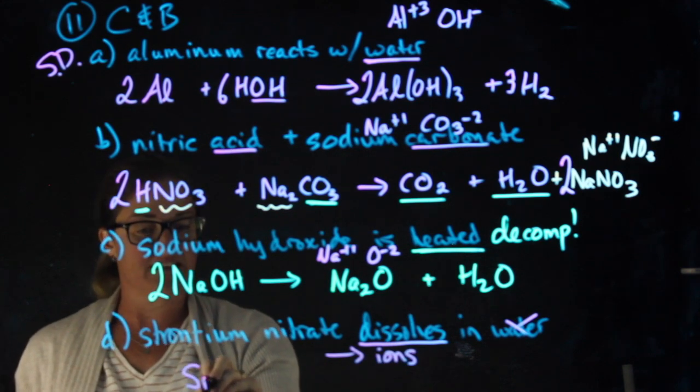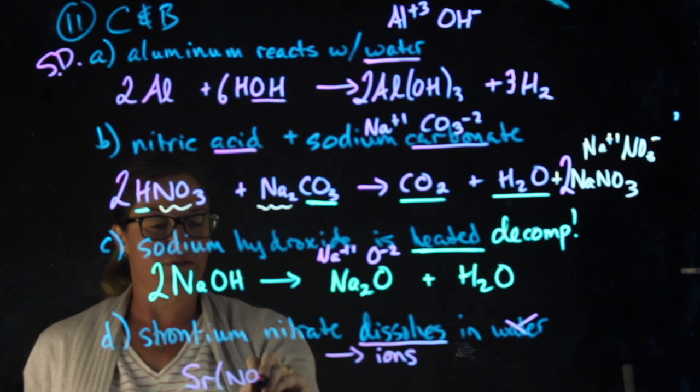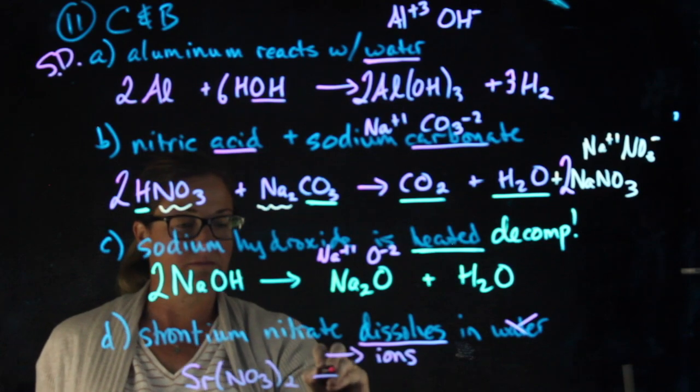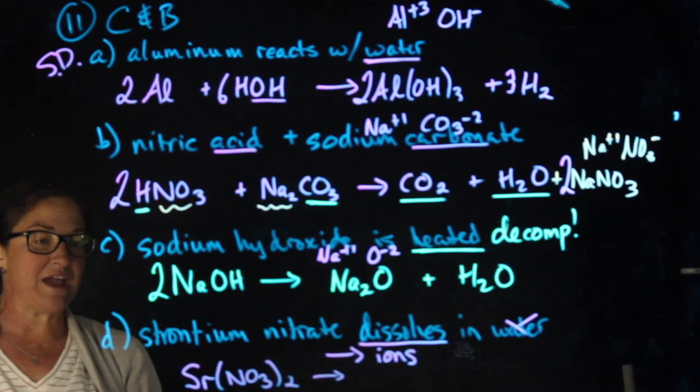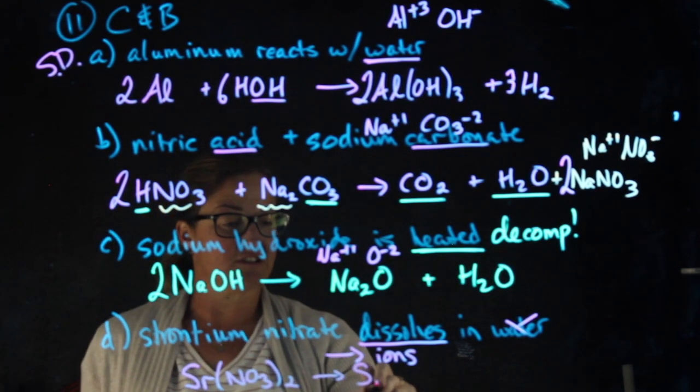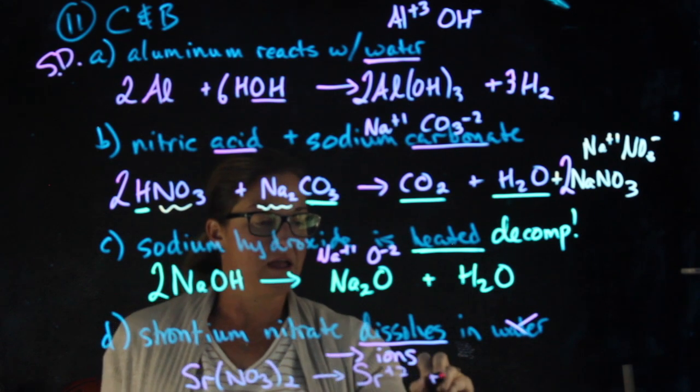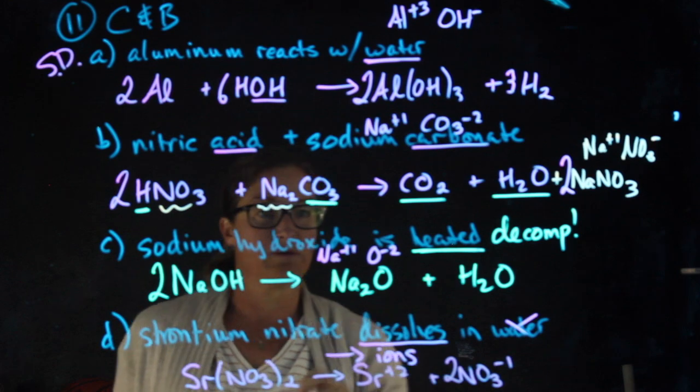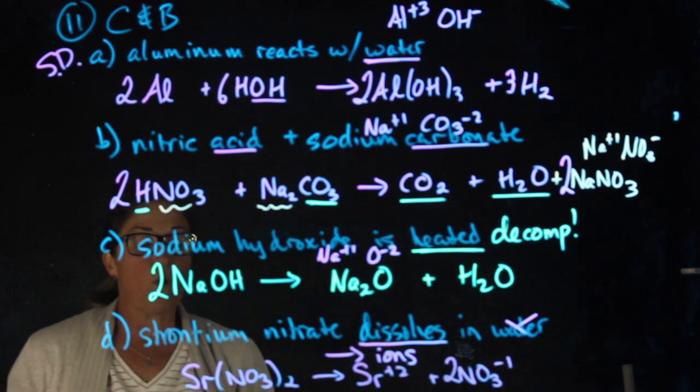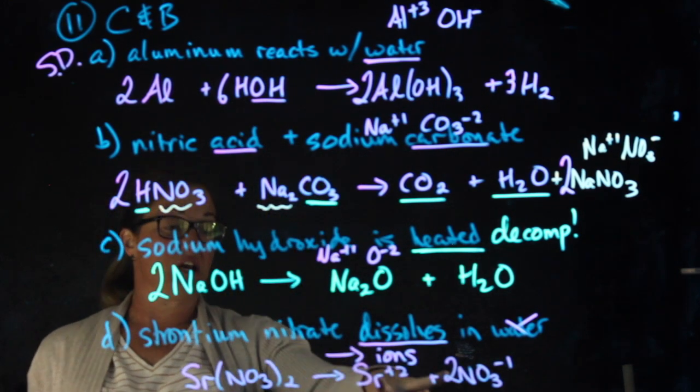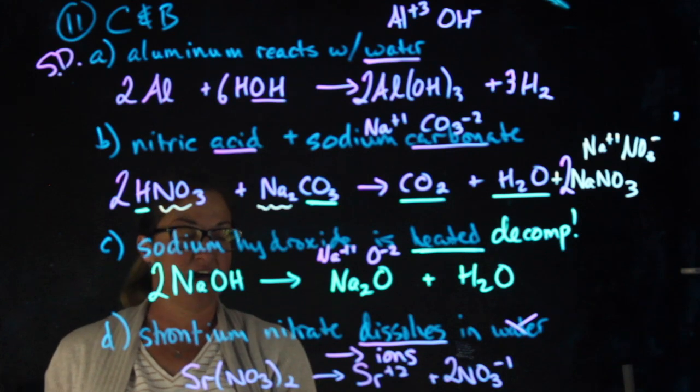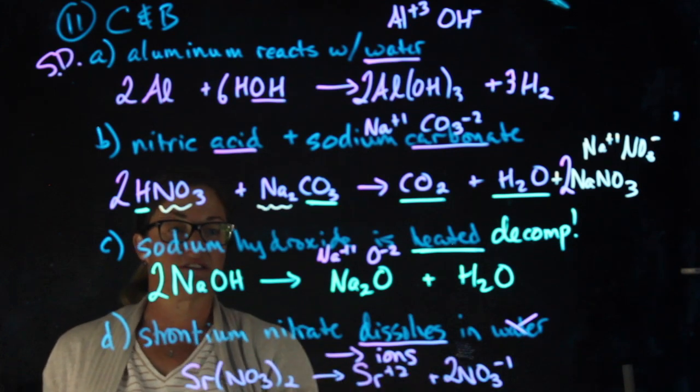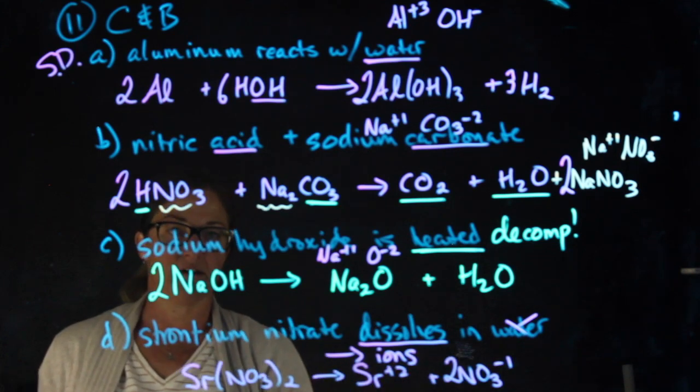It will break into Sr+2 and nitrate. I will need two nitrates. With a dissolving reaction, you never get diatomics on the right-hand side. We need to show our charges, and we don't break apart our polyatomic ions.